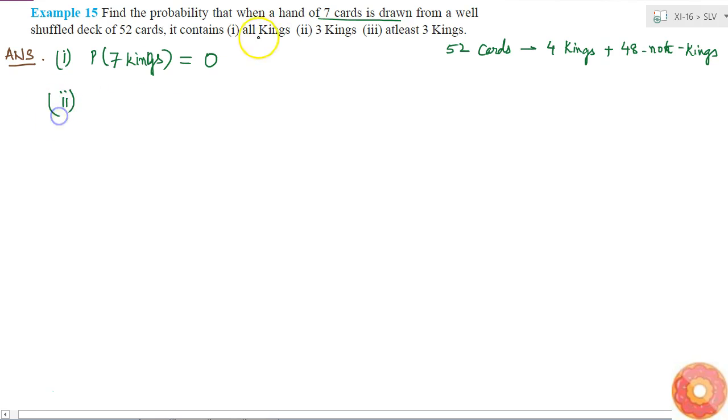The second part is it contains 3 kings. This is possible because there are 4 kings in the total set of 52 cards, so you can get 3 kings when you take out 7 cards. What is the probability for that? Probability of 3 kings will be...